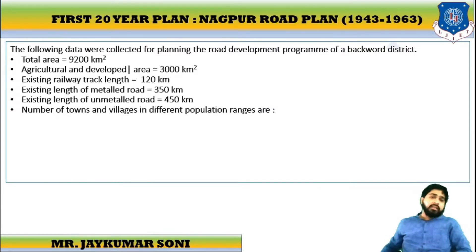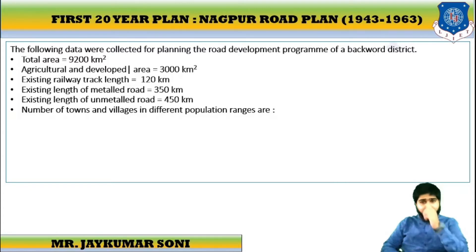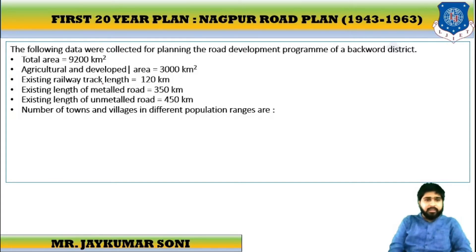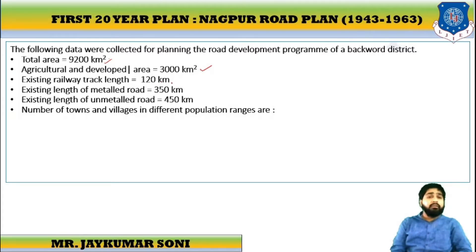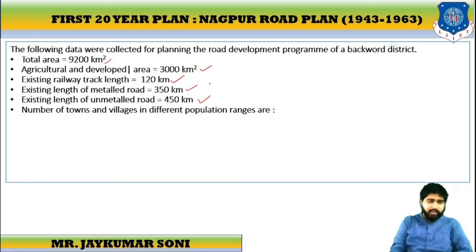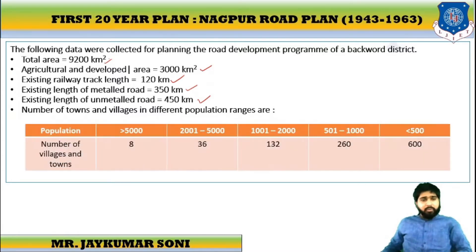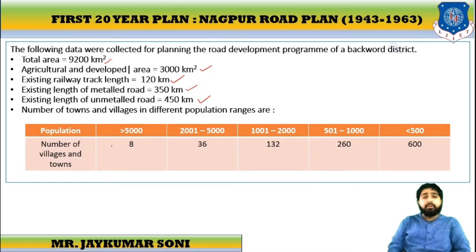This is the statement of the first example. The formal data were collected for the planning of a road program for a backward district. Total area is given. The existing length of metal road is 60 km. The population data is also given. The number of villages or towns with population over 5,000 is 8.